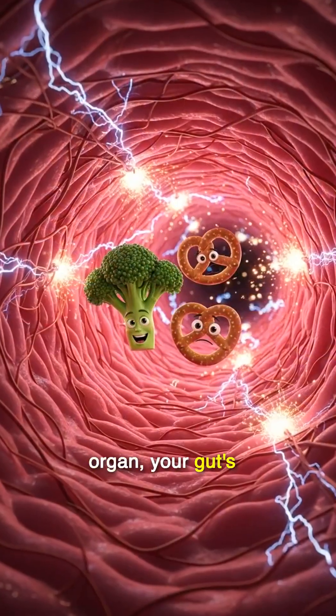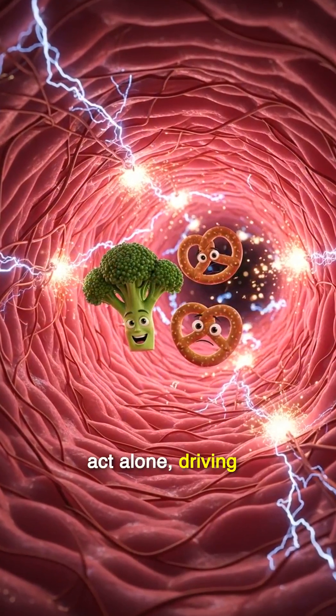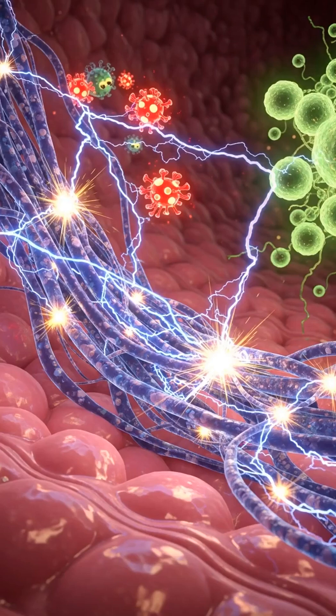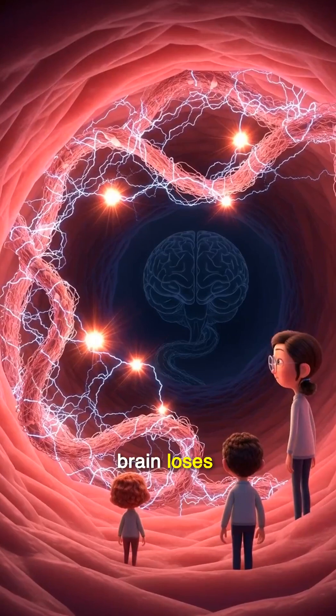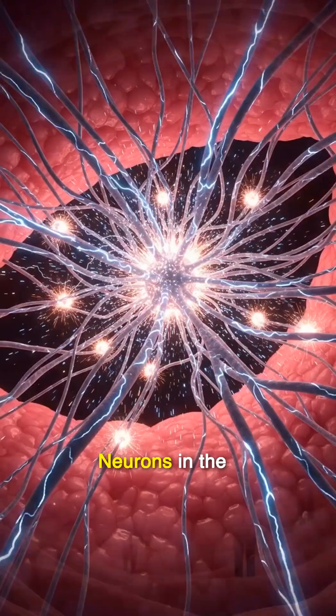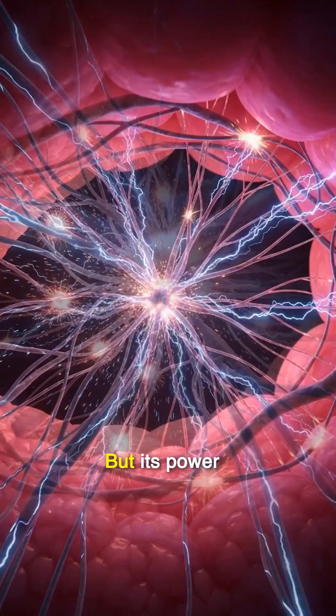Unlike any other organ, your gut's nervous system can act alone, driving digestion, moving food, and defending against microscopic threats, all without your brain's command. Even if the brain loses contact, the gut keeps working, neurons firing independently, but its power goes further.